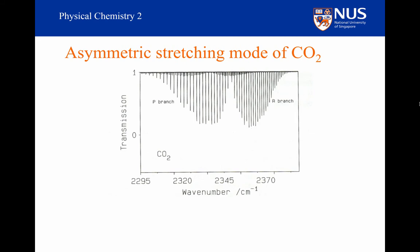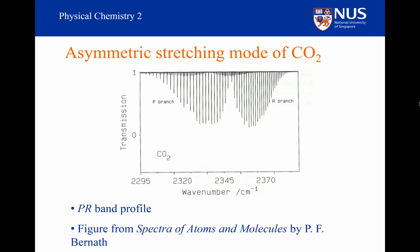Let's have a look at carbon dioxide. This is what you would have seen in your HCl experiment at around 2,350 wavenumbers. On the left, at lower frequencies, we have the P branch, and on the right, at higher frequencies, we have the R branch. We are missing a line in the centre because that would be a transition for delta J equal to 0, which is not allowed. Again, we've got a PR band profile, so this has to be a parallel vibration.